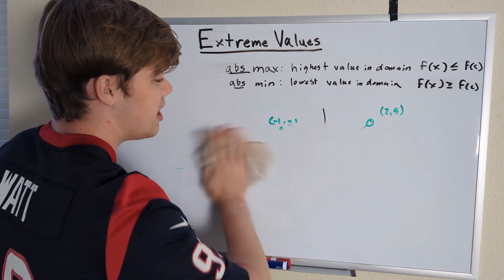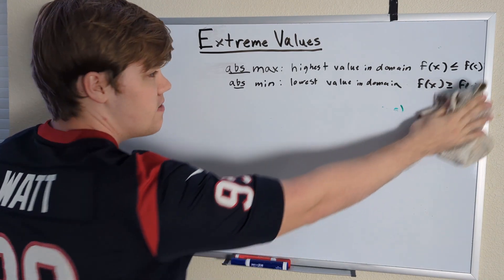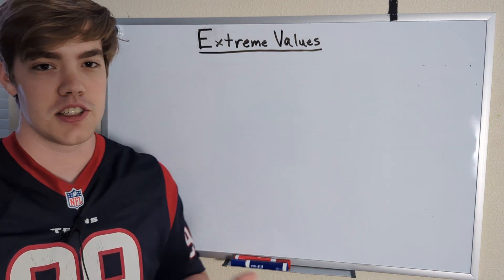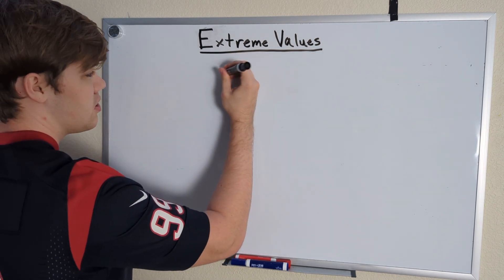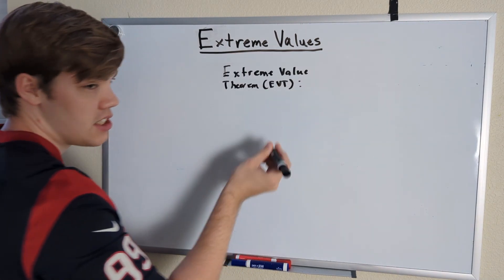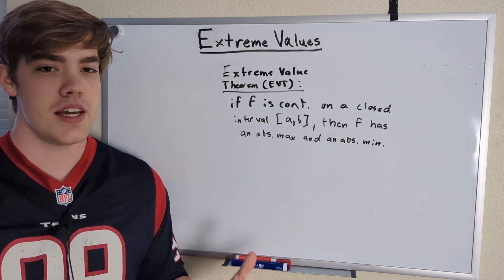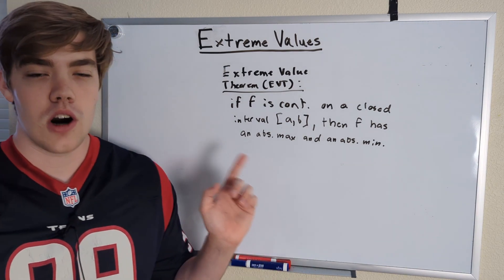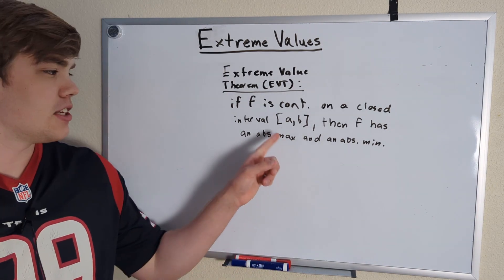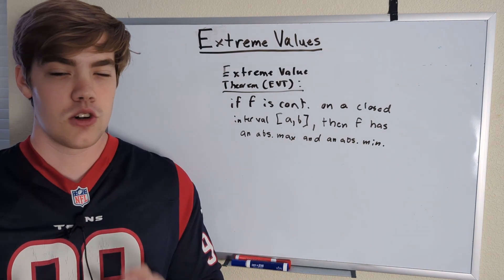Now that we've talked about absolute maximums and minimums, I want to talk about the Extreme Value Theorem — it's kind of part of the title of this video. The Extreme Value Theorem, also known as EVT, states the following: if f is continuous on a closed interval [a, b], then there will always be an absolute maximum and absolute minimum. Remember, this is only for a closed interval. On an open interval, it could be a little different.